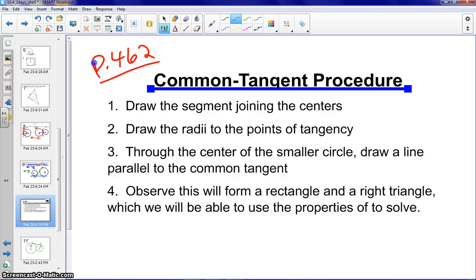The first one, we are going to draw the line of centers. And the second one is we're going to draw in the radii to the points of tangency forming our right angles. The third step is the most crucial step. Through the center of the smaller circle, draw a line parallel to the common tangent. This will do two things for us. It will form a rectangle and a right triangle, and then we'll be able to use Pythagorean theorem and properties of that rectangle to help us solve the problem.